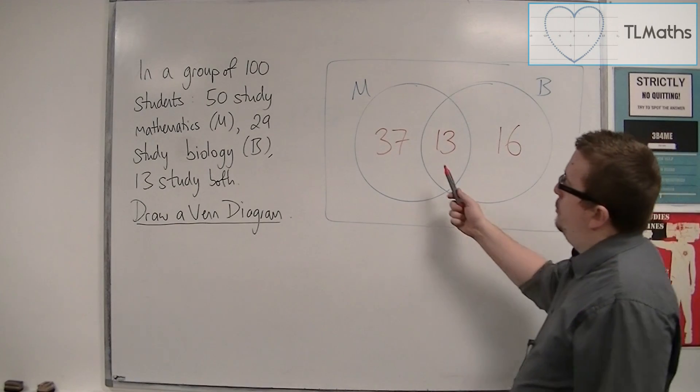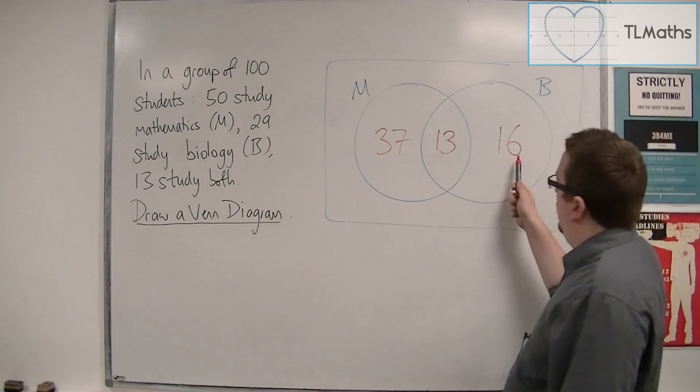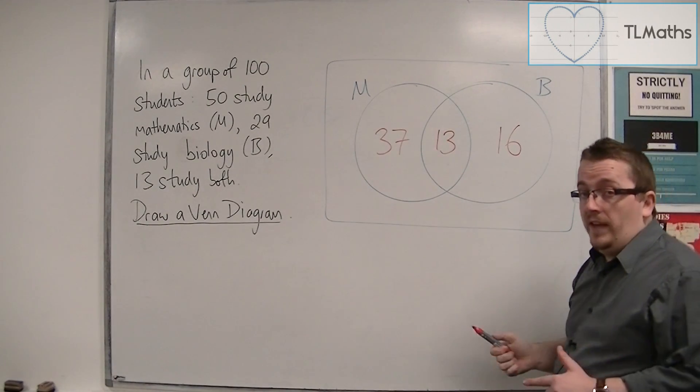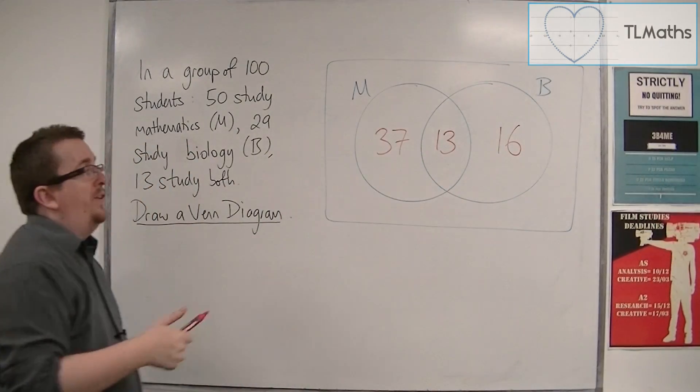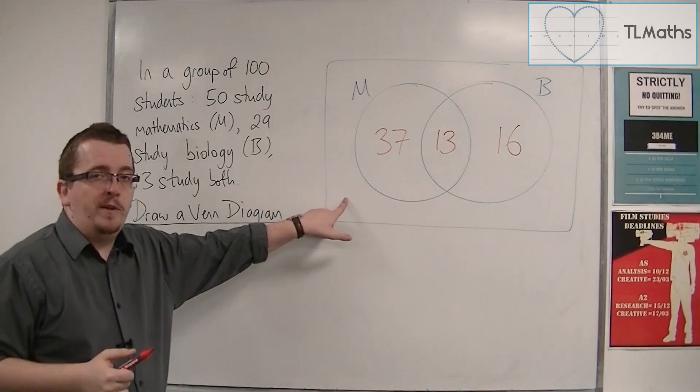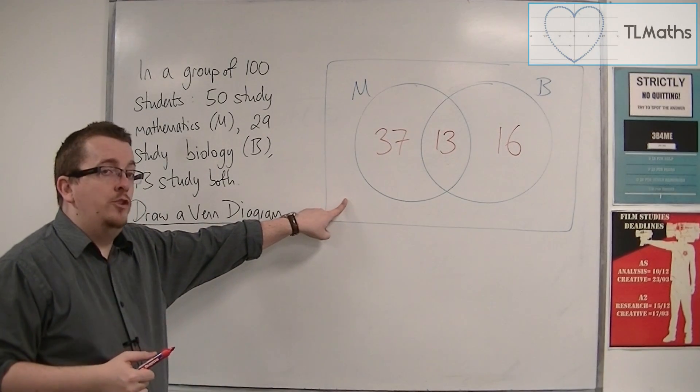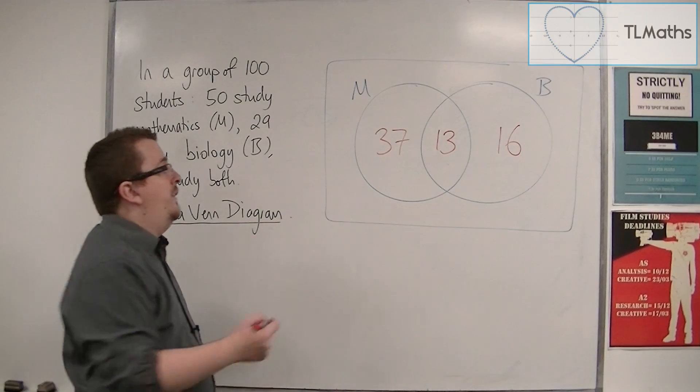So in total, we've got 50 plus 16, so 66. So 66 study maths, biology, or both. And so whoever's left over must be on the outside. So 100 take away 66 is 34.